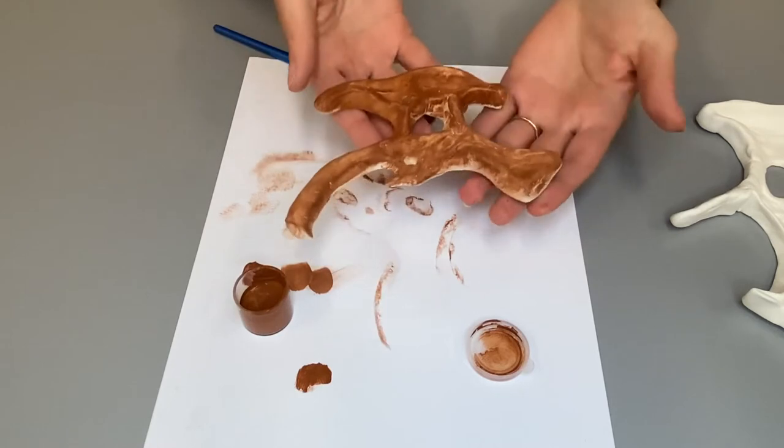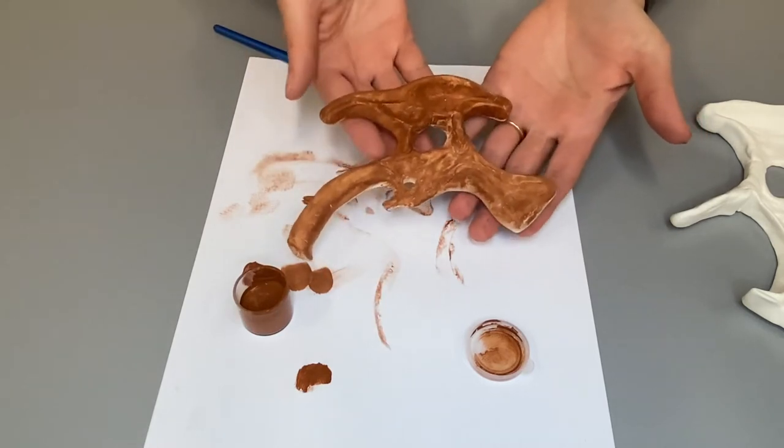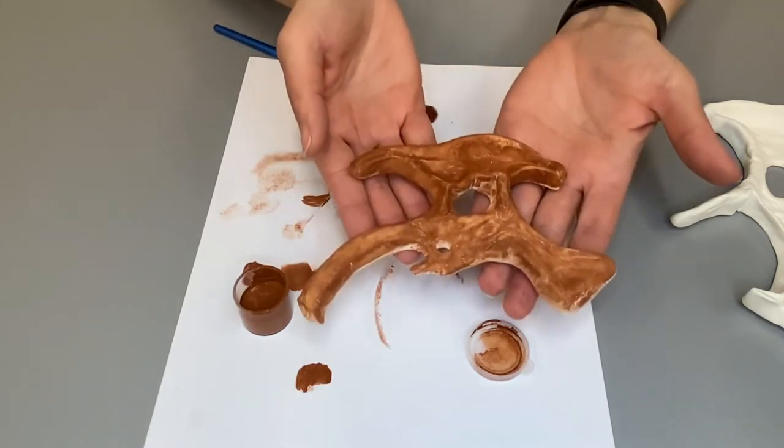Once you are done with painting the front and sides of the bone, go ahead and set it to the side and allow it to dry.